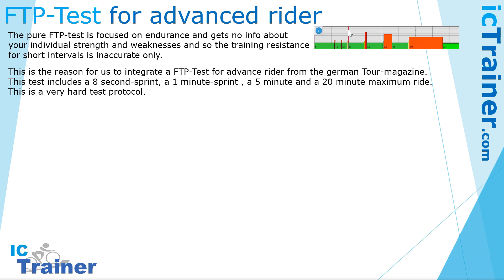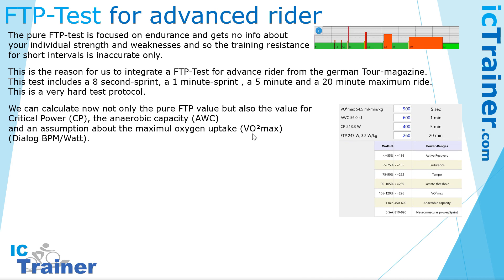In this advanced test we have an 8-second sprint, a 1-minute sprint, a 5-minute exertion, and a 20-minute exertion. It's a very hard test protocol, but we get more information about the different training areas. We can calculate not only the pure FTP value, but also the critical power, the anaerobic work capacity (AWC), and an estimate of maximum oxygen uptake, VO2 max.